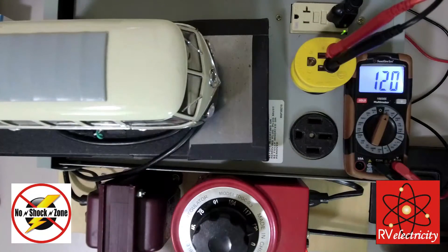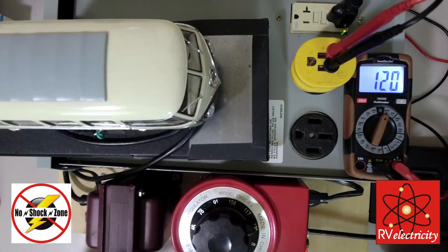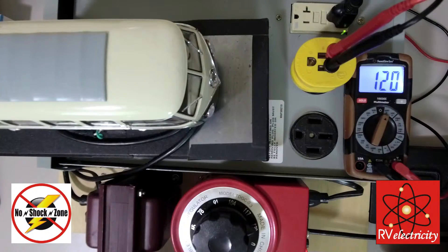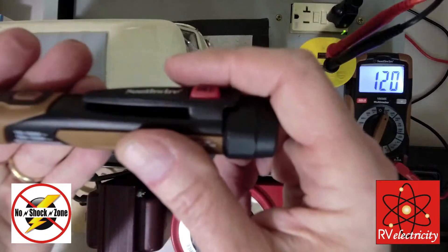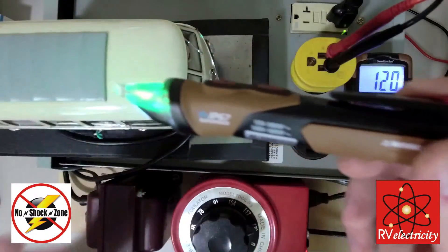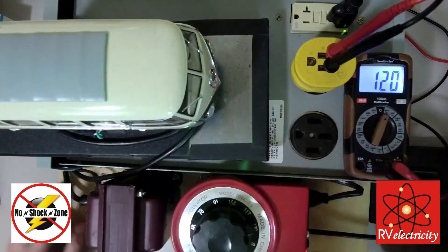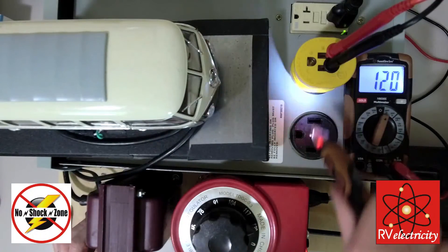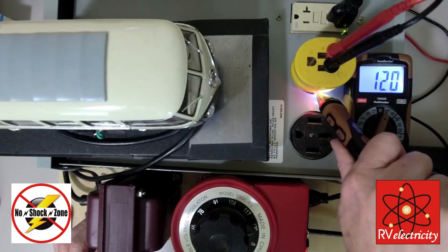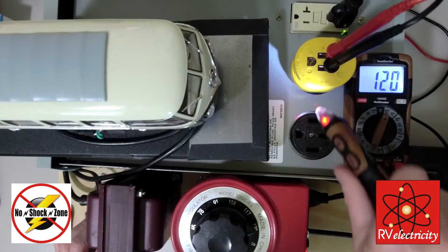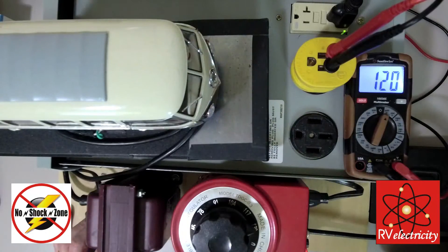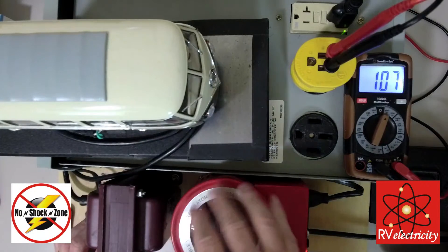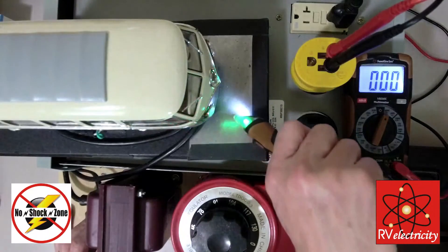So anytime you have a non-contact voltage tester, you want to first confirm that the thing is operational. So I've got this thing turned on right now. I'm going to go ahead and poke it at a known outlet because I know that outlet is hot with 120 volts on it right now. You see it's beeping at us and blinking at us. So we know that the tester has not failed and it's going to give us a false negative. I'm going to turn our voltage all the way down here to zero.